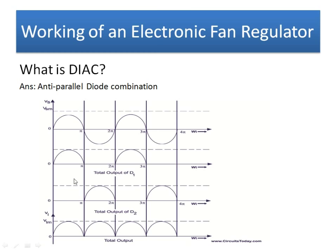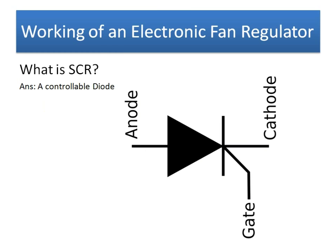The advantage of a DIAC over a single diode is that with a single diode we get only one half cycle — 50% of the power — and the other half is lost. With a DIAC, the power can be utilized efficiently for the full cycle.